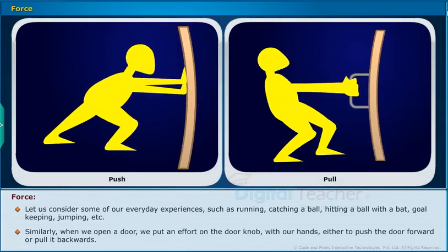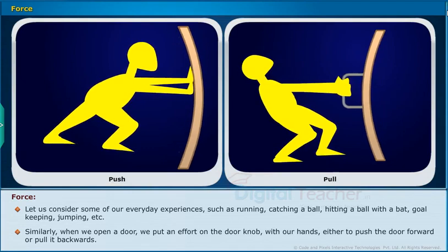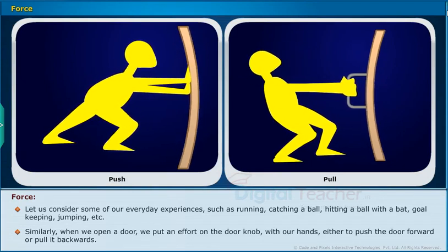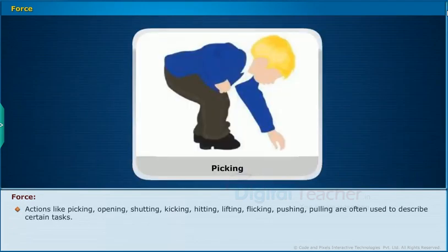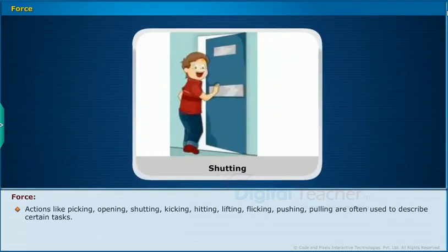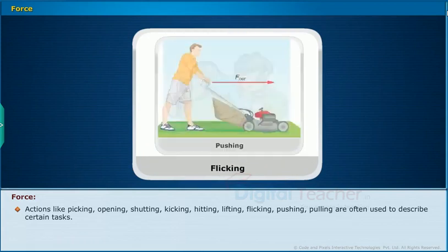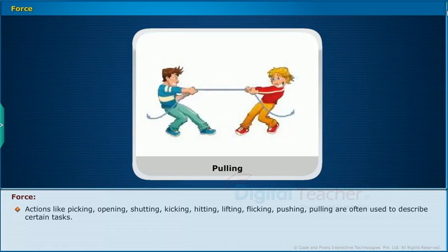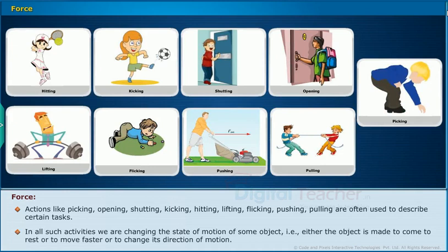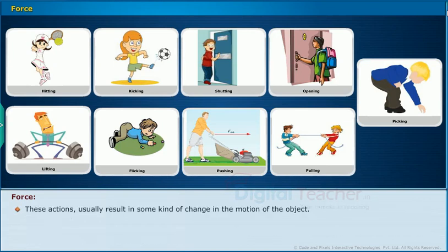When we open a door, we put an effort on the door knob with our hands either to push the door forward or pull it backwards. Actions like picking, opening, shutting, kicking, hitting, lifting, flicking, pushing, and pulling are often used to describe certain tasks. In all such activities, we are changing the state of motion of some object — either the object is made to come to rest, or to move faster, or to change its direction of motion. These actions usually result in some kind of change in the motion of the object.